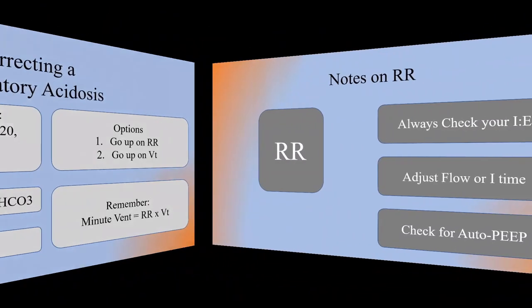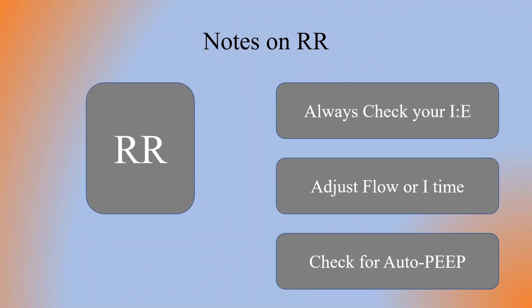A few notes on respiratory rate: always check your I to E ratio. You want to make sure that you're giving your patient enough time to exhale. If you're not, you can always adjust the flow on a volume control setting or the I-time on a pressure control setting. Verification of a proper I to E ratio will help prevent auto-PEEP. You don't want your patient to auto-PEEP and eventually have barotrauma to deal with later.